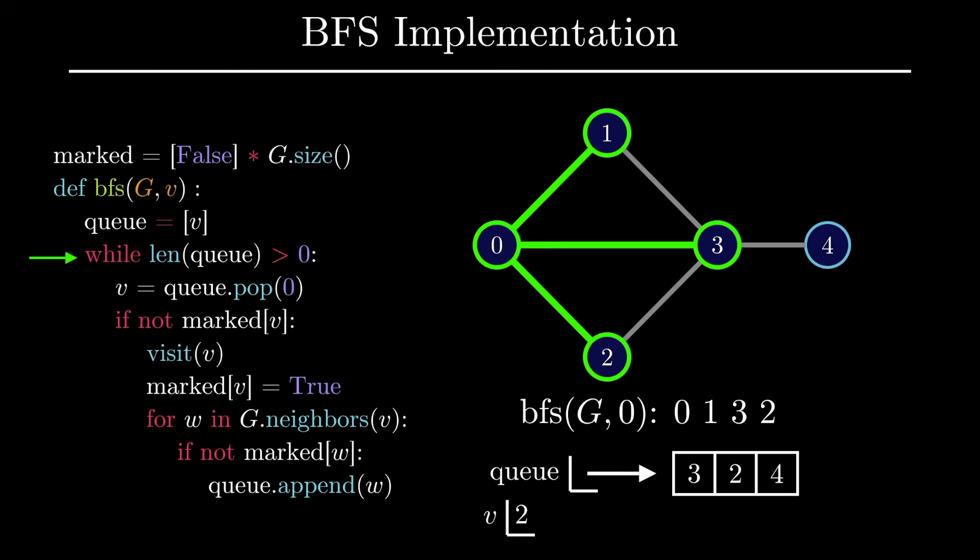The next vertex that is removed from the queue is vertex 3, but this vertex has already been marked, so we move on. The same thing happens in the next iteration with vertex 2. We now have one remaining vertex in the queue, which is vertex 4.